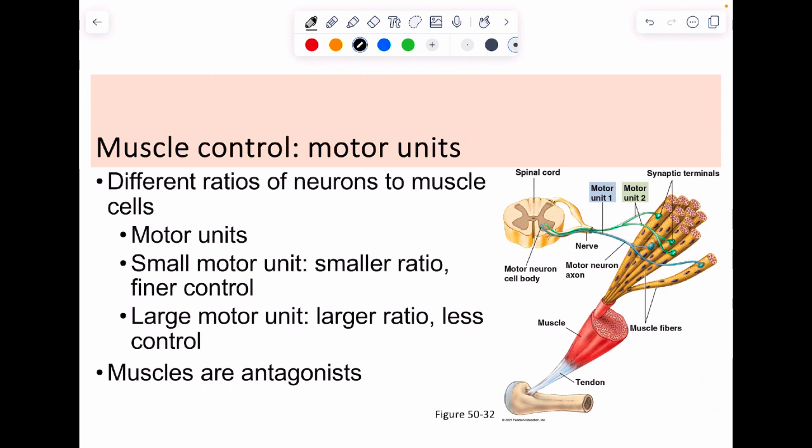We can control this in structures called motor end plates, which are ratios of neurons to muscle cells—we call those motor units. A small motor unit has a small ratio, meaning few muscle cells per motor neuron. Large motor units have larger ratios. The smaller the ratio, the better the control, which means more brain power is needed. The larger the motor unit, the less brain power necessary, and the less fine control you get.